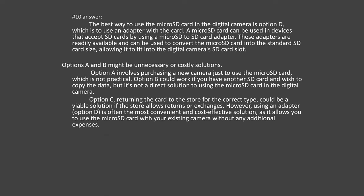The best way to use the micro SD card in the digital camera is Option D: Use an adapter with the card. A micro SD card can be used in devices that accept SD cards by using a micro SD to SD card adapter. These adapters are readily available and convert the micro SD card into the standard SD card size, allowing it to fit into the digital camera's SD card slot. Options A and B might be unnecessary or costly — buying a new camera is impractical, and copying data requires another SD card. Option C (returning the card) could work if the store allows it, but using an adapter is the most convenient and cost-effective solution.